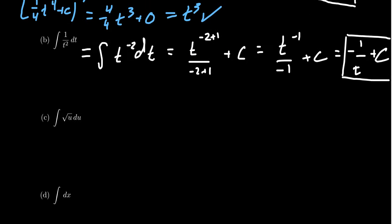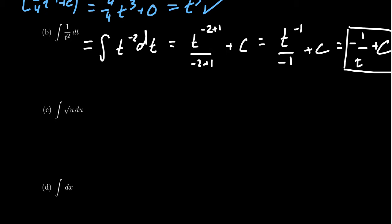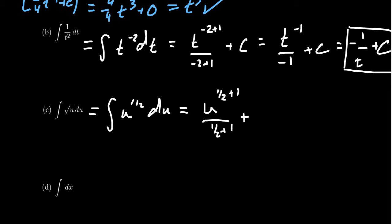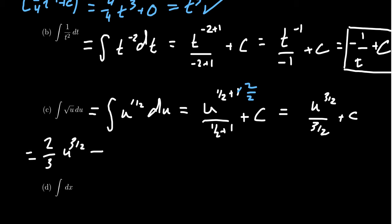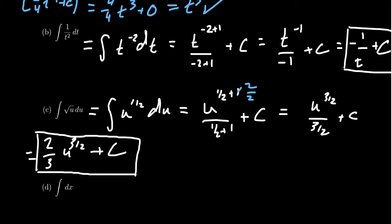As another example, take the integral of the square root of u. Recognizing it as a power function, we write this as u to the one-half power. By the anti-power rule, we increase the exponent by one and divide by the new exponent, plus a constant. One-half plus one is one-half plus two-halves, which gives three-halves. We're dividing by three-halves, and whenever you divide by a fraction you multiply by the reciprocal, so you end up with two-thirds u to the three-halves plus a constant.